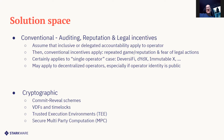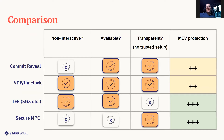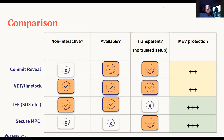For cryptographic primitives, we have four options: commit-reveal schemes, VDFs and timelocks, trusted execution environments like Intel SGX, and secure multi-party computation. Looking at a brief comparison, non-interactive protocols are preferable since interactive ones are harder to secure. VDFs and trusted execution environments are non-interactive, whereas commit-reveal and secure MPC are interactive.